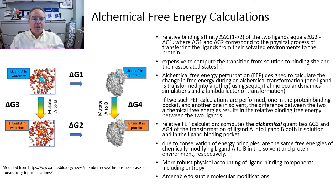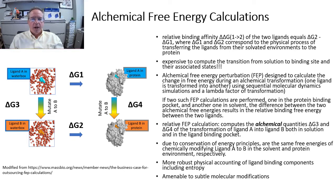So in this study, we employed a more expensive but more robust methodology to incorporate the effects of the entropy of binding. The method used is called alchemical free energy perturbation simulation, and is designed to calculate the change in free energy during an alchemical transformation as one ligand is morphed into another. If two such calculations are performed — one in the protein binding pocket and another in the solvent —